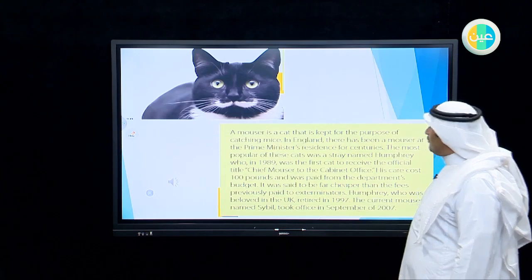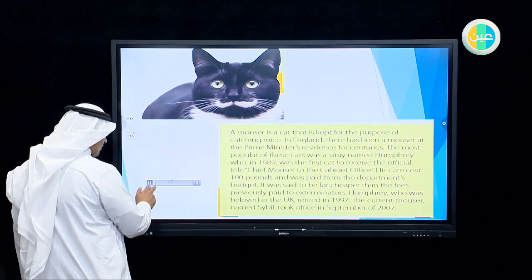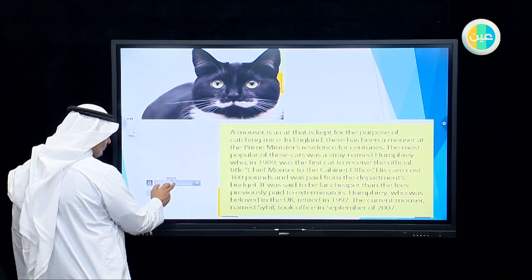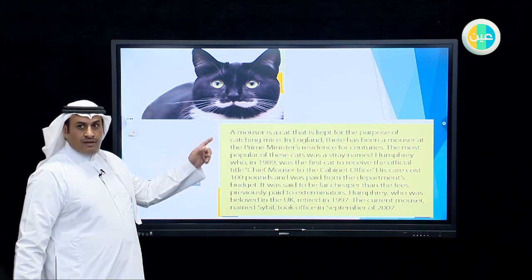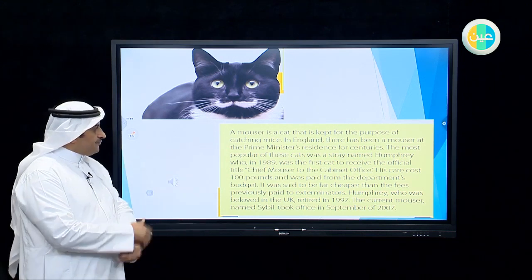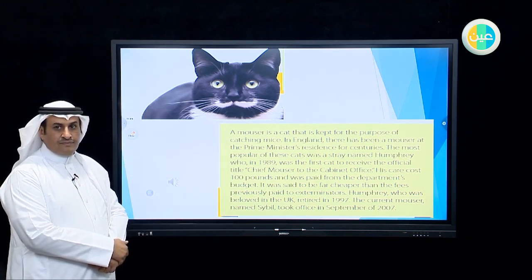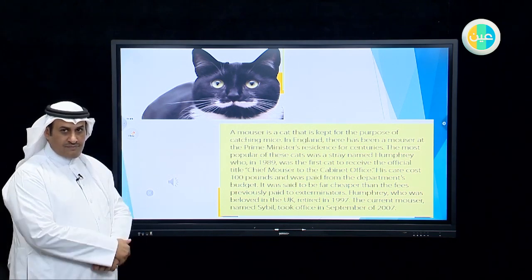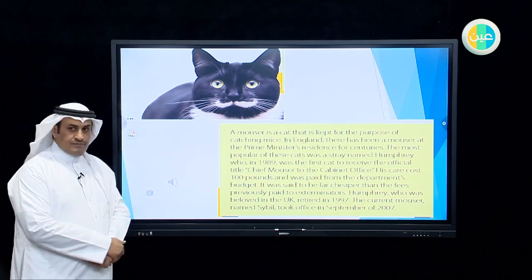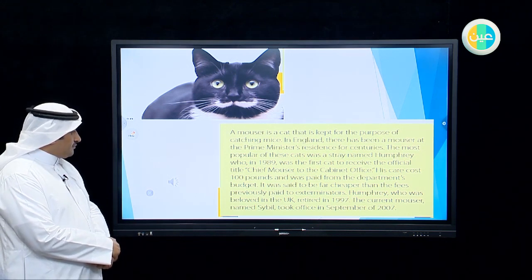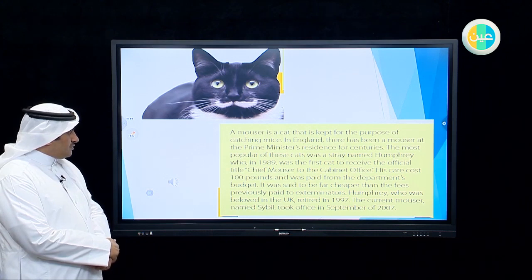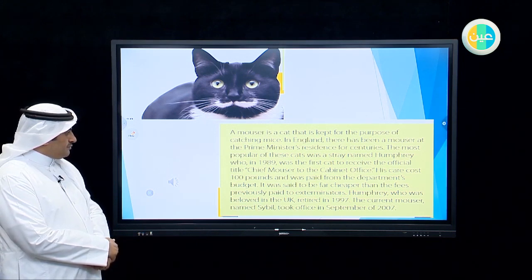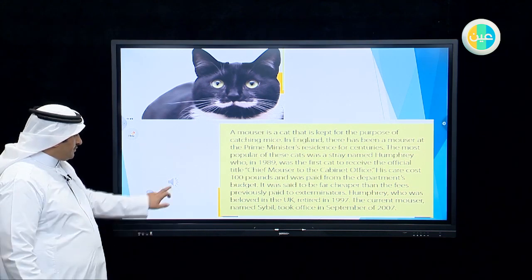Now we move to the story about the cat — the mouser. A mouser is a cat kept for the purpose of catching mice. In England, there has been a mouser at the prime minister's residence for centuries. The most popular was a stray named Humphrey, who in 1989 was the first cat to receive the official title Chief Mouser to the Cabinet Office. His care cost 100 pounds, paid from the department's budget — far cheaper than the fees previously paid to exterminators. Humphrey, who was beloved in the UK, retired in 1997. The current mouser, named Sybil, took office in September 2007.